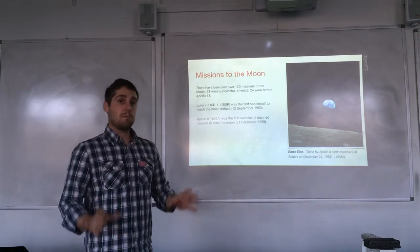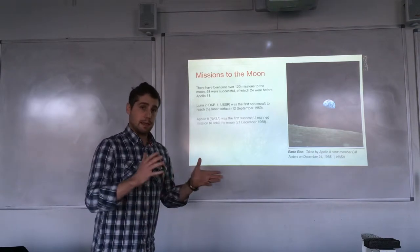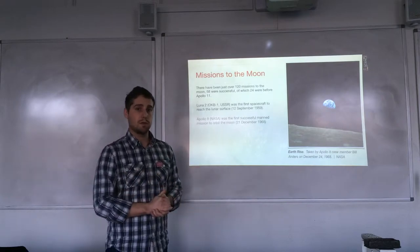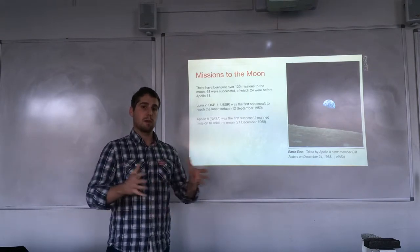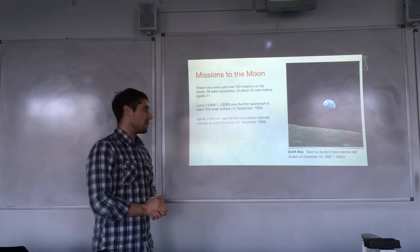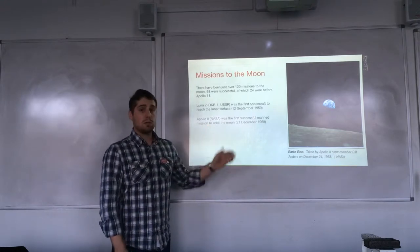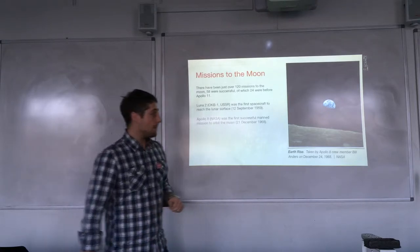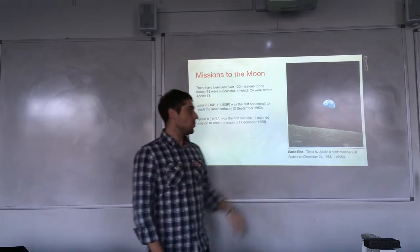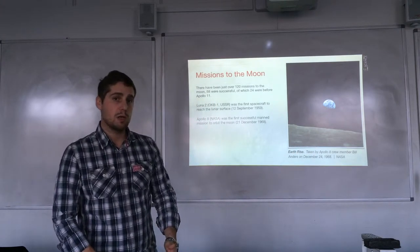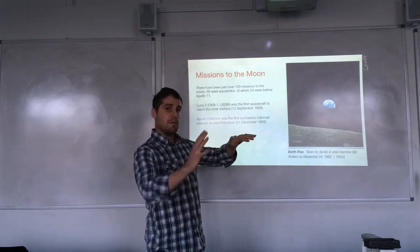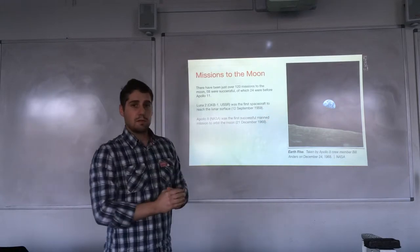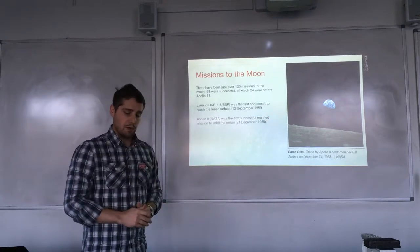Apollo 8 was the first manned mission to the moon — not that they landed, but they orbited it. They were the first to escape the main area of influence of the Earth's gravitational field. They orbited the moon ten times, and that happened in 1968. This is a very famous photograph called Earthrise, which was taken on the Apollo 8 mission. Just as they were coming around from the far side of the moon, the Earth was appearing to rise above the horizon.